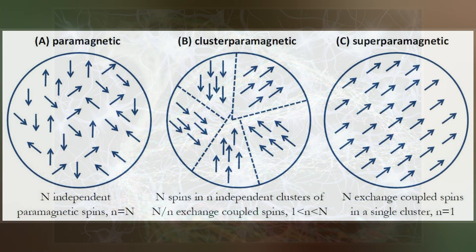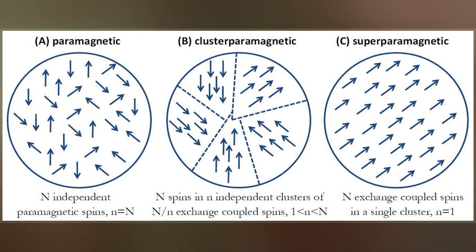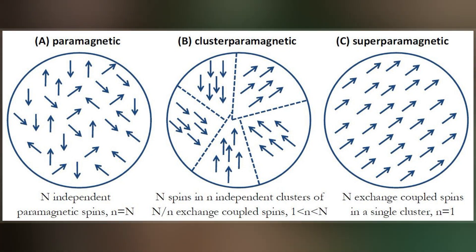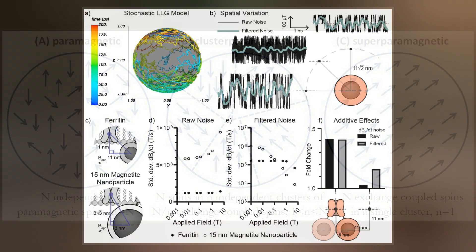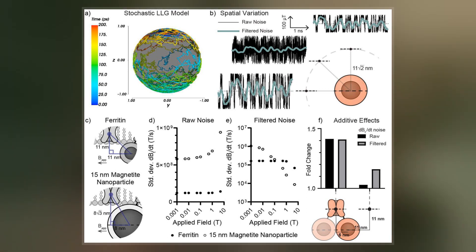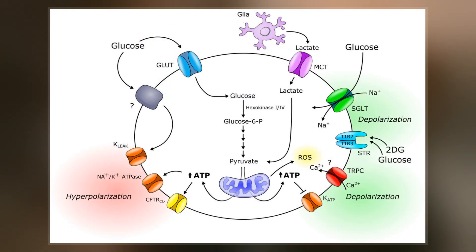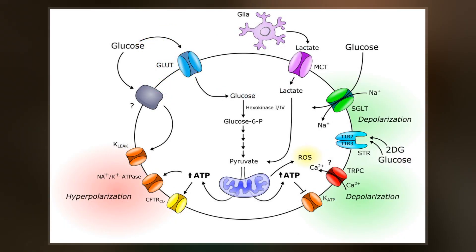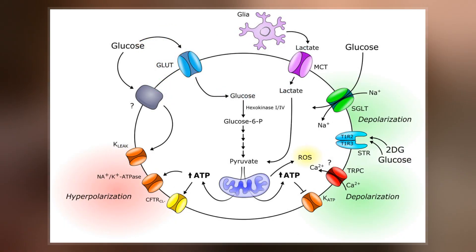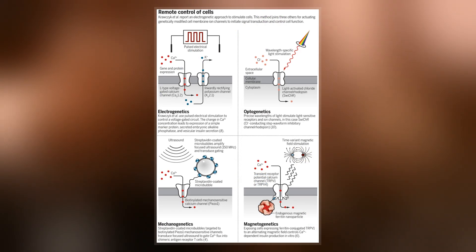In magnetogenetics, magnetic stimulation is used instead of light, a characteristic that allows for a less invasive, less toxic, and wireless modulation of cell activity. Cell activity control is achieved using magnetic compounds such as ferritin or magnetic nanoparticles. These compounds are designed to link to the ion channels that are genetically expressed on specific cells.